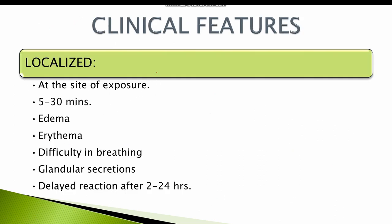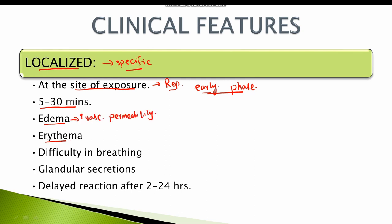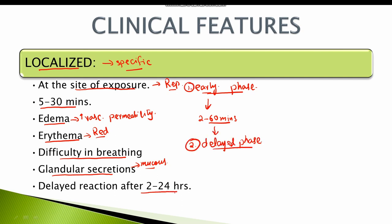The allergic reaction or type 1 hypersensitivity reaction could be localized, meaning contained to a specific area, most commonly at the site of exposure — such as the respiratory tract in case of bronchial asthma, or the skin in case of urticaria. The early phase typically starts in 5 to 30 minutes of antigen exposure, causing edema due to increased vascular permeability and erythema of the skin. If the site of exposure is the respiratory tract, there is difficulty in breathing due to edema and excessive mucous secretion. The early phase lasts up to 60 minutes, followed by the delayed phase appearing after 2 to 24 hours with the same signs and symptoms.